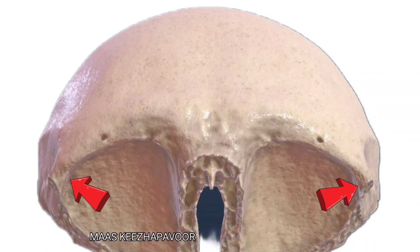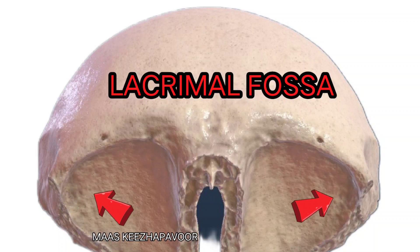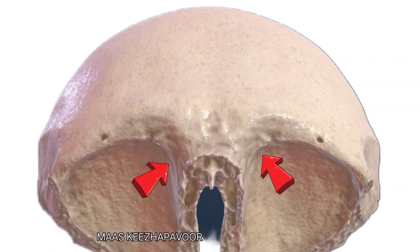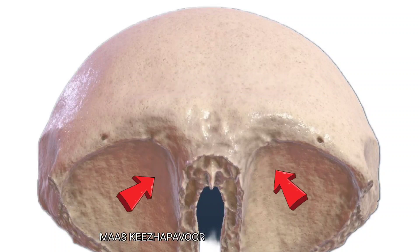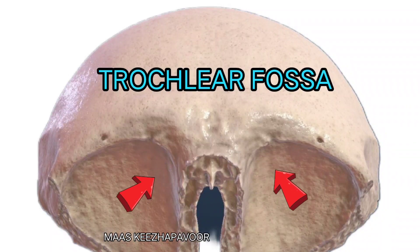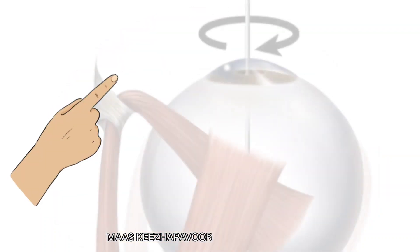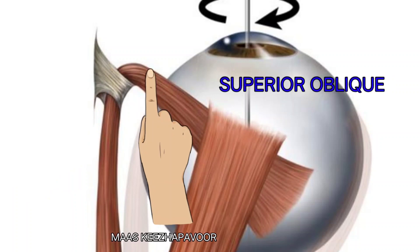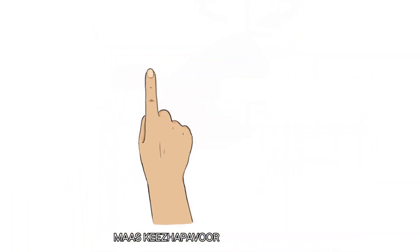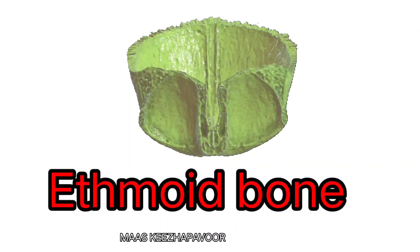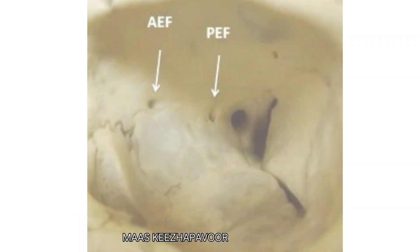The orbital surface forms the roof of the orbit. This surface shows the lacrimal fossa in its anterolateral part, which lodges the lacrimal gland. On the medial side of the roof of the orbital cavity, the frontal bone has the trochlear fossa, giving attachment to the trochlea or pulley, which is a modified form of periosteum. The superior oblique muscle of the eyeball passes through this pulley. The orbital plate posteriorly articulates with the lesser wing of sphenoid and medially with the ethmoid bone.